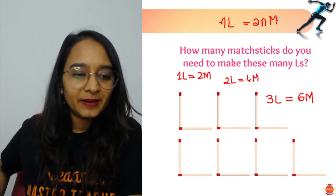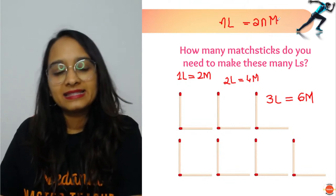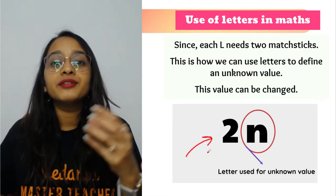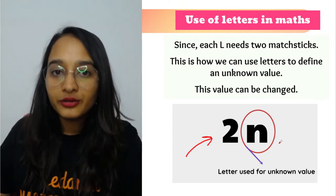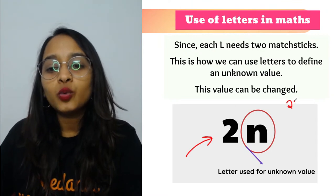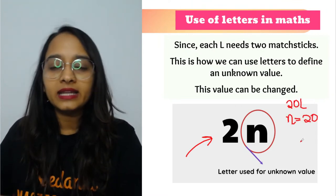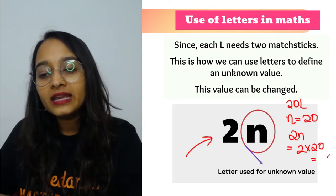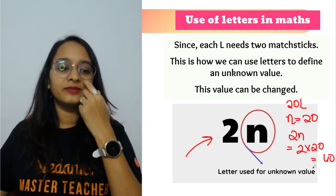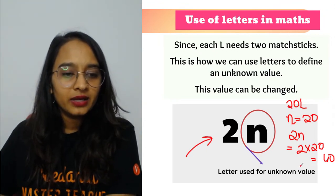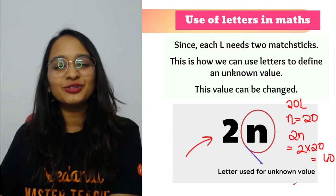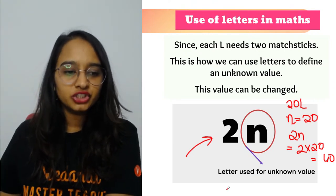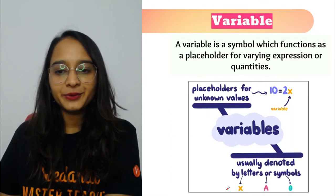Very well done! So if you want to make n number of L's, we write a general rule: 2n. Your n can be anything. If you want to make 20 L's, then how many matchsticks do we need? Two multiplied with n, that is 2 multiplied with 20, which is 40 matchsticks. We also have a new Telugu channel on Vedantu — it's called Vedantu Telugu, just type it and you will get the channel.